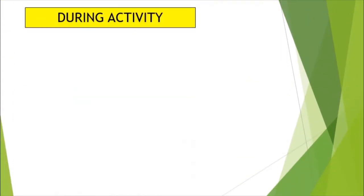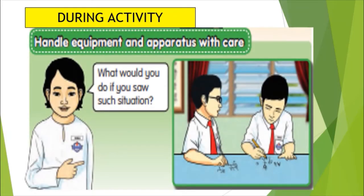This is another thing during activity. We must handle equipment and apparatus with care. If you see the picture here, there are two boys scribbling on the table. This is not good. Do not scribble on the tables, because this will make the table untidy.